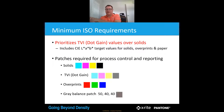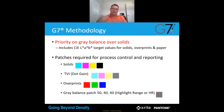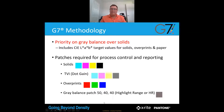To give you an idea with ISO: it prioritises dot value over solids, and includes CIE LAB colour targets for solids, overprints and paper. The patches you would normally use are your CMYK solids, CMYK for TVI (dot), your overprints, and grey balance. Whereas something like G7 prioritises grey balance over solids — once again it includes CIE LAB targets for solids, overprints and paper, with the same patch requirements except for the grey balance patches, which are different.